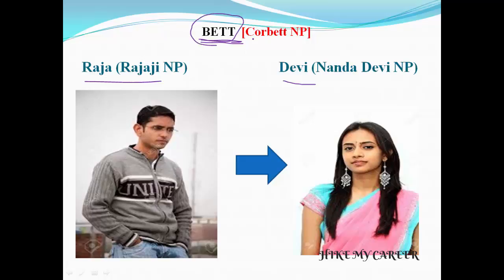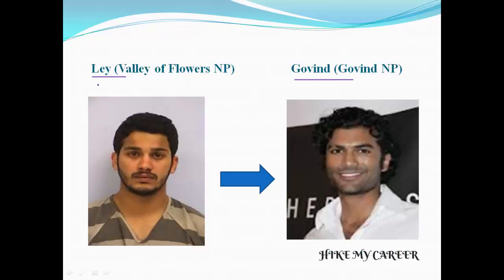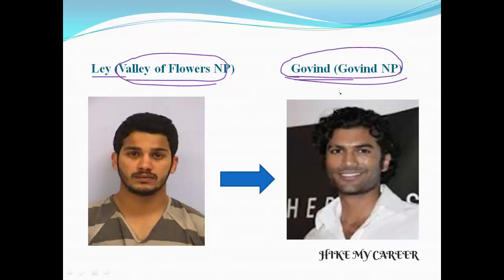Bet means Corbett National Park. Lee means Valley of Flowers National Park, and Lee betting on Govind gang — Govind means Govind National Park. So the complete story to recall all parks: Raja betting on Devi gang, Lee betting on Govind gang. Please note the story and watch the video at least twice so it will be easy.